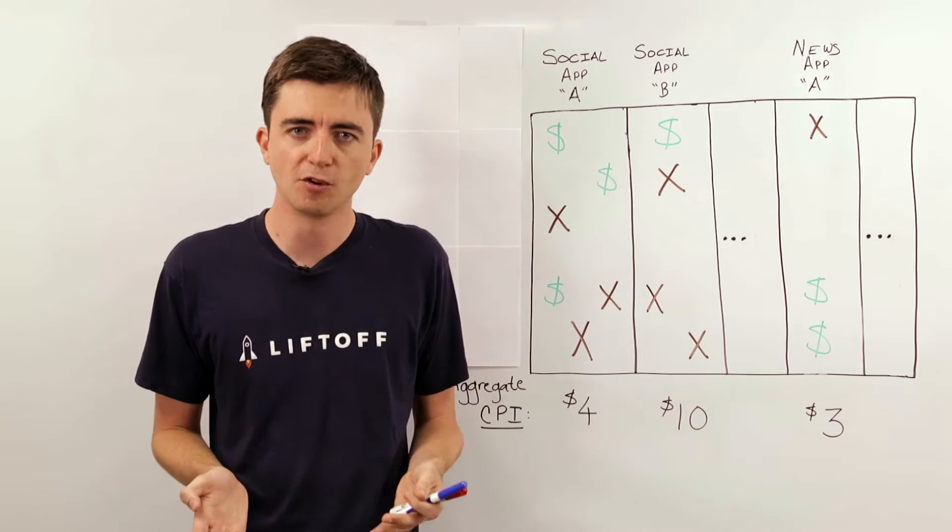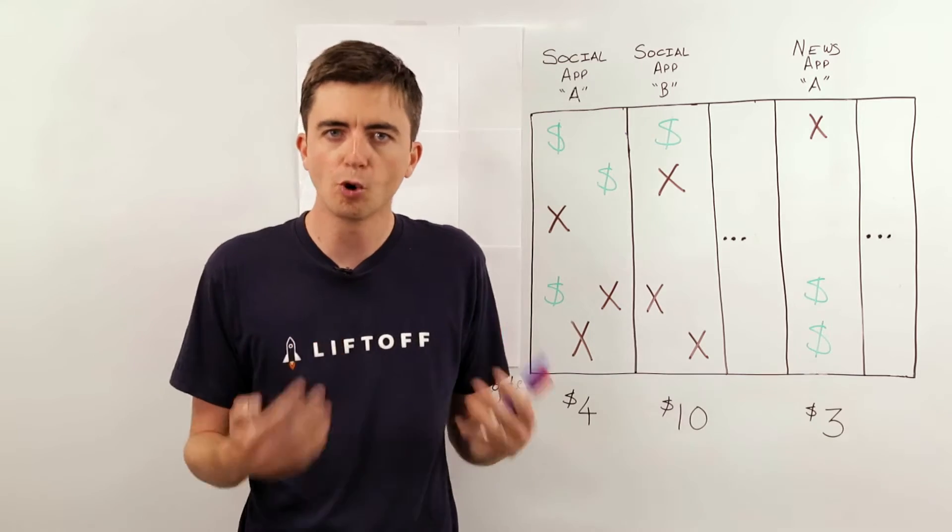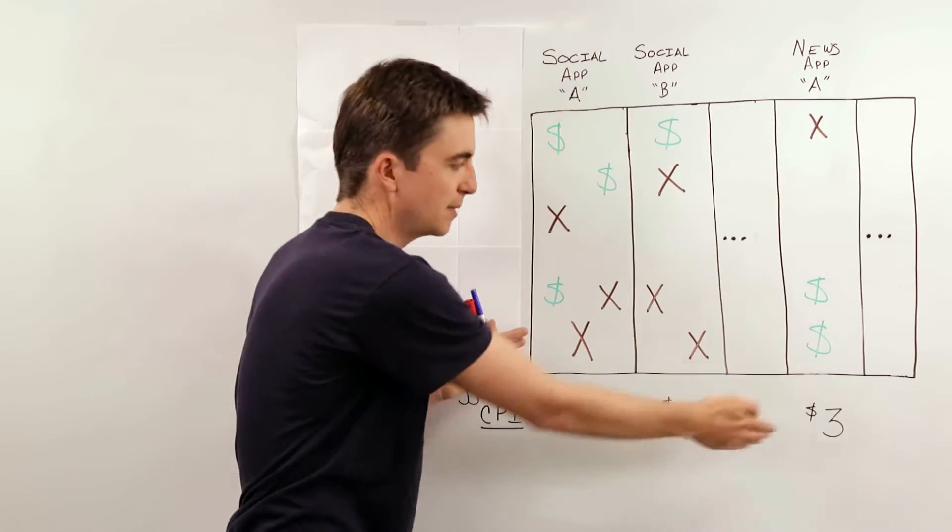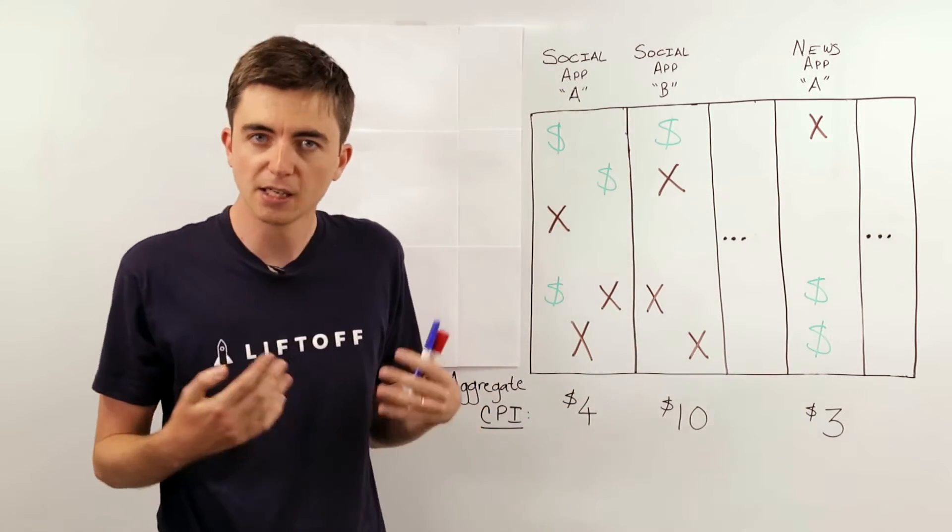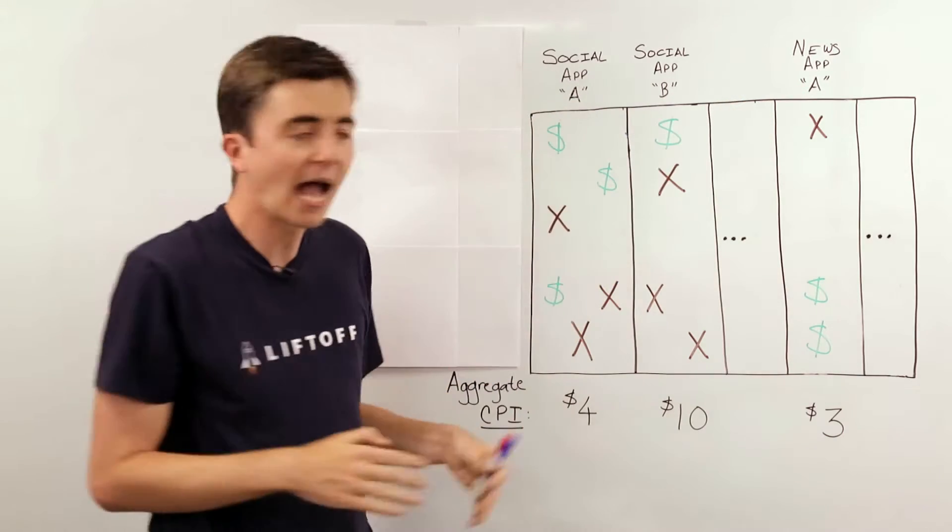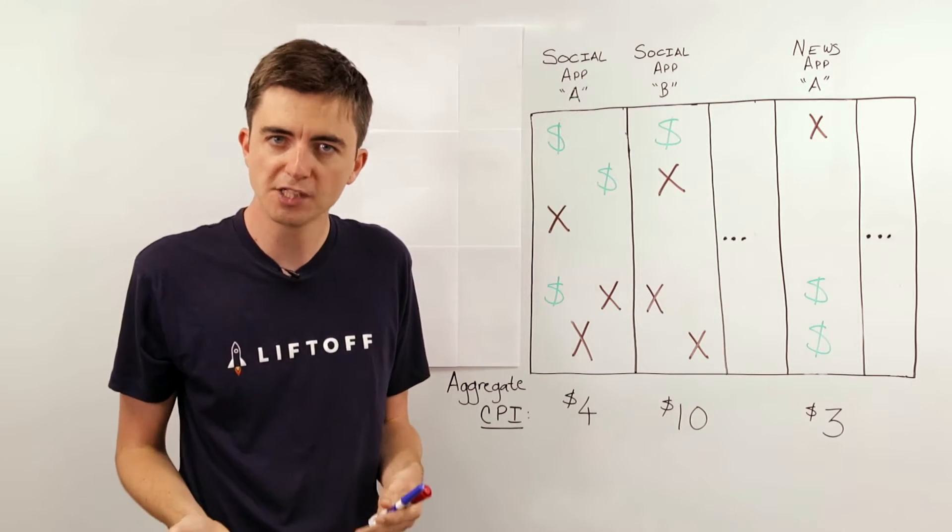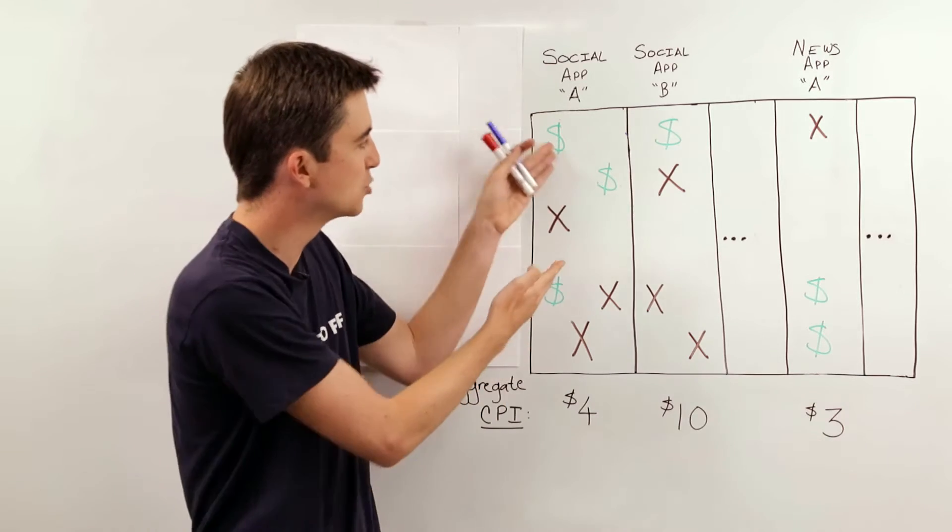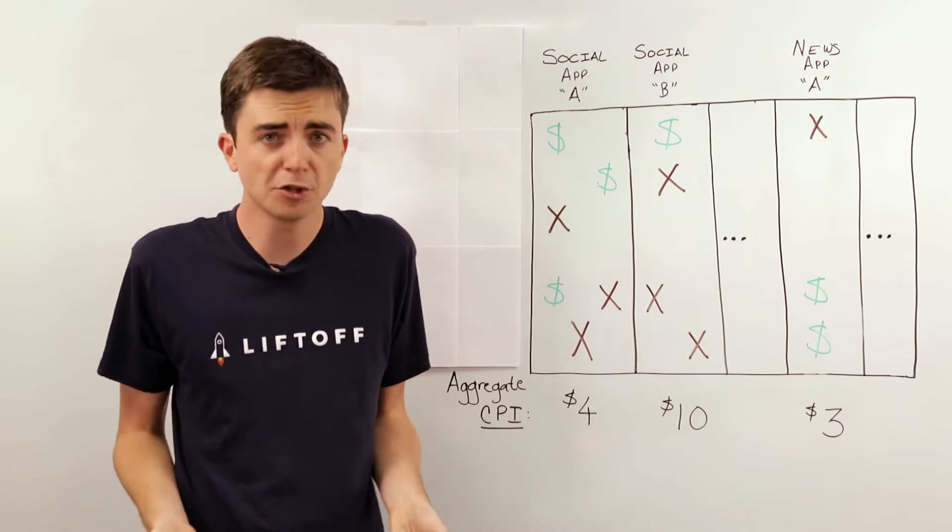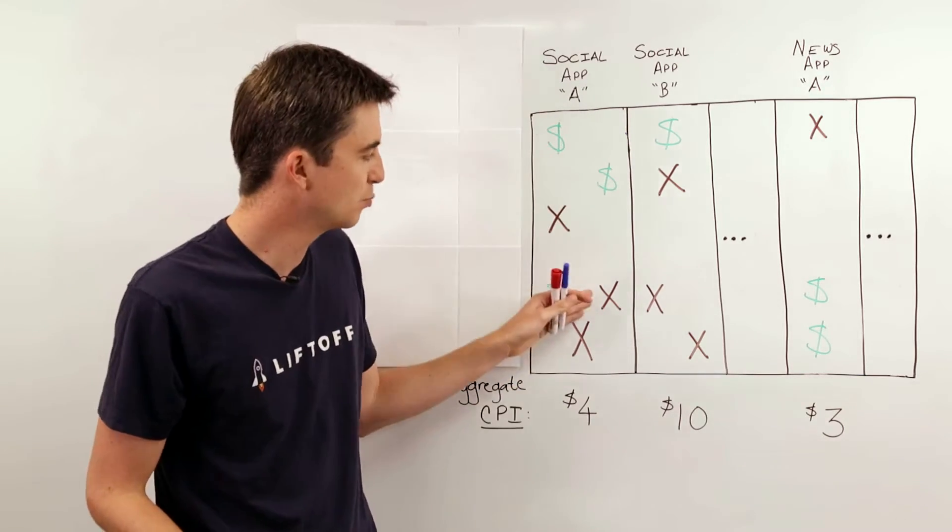Now, ad networks or demand-side platforms typically have access to a broad set of inventory represented by this big rectangle here spanning many different applications and covering some users who have a high probability of converting to your application represented by these green dollar signs and a lot that don't, represented by these brown crosses.